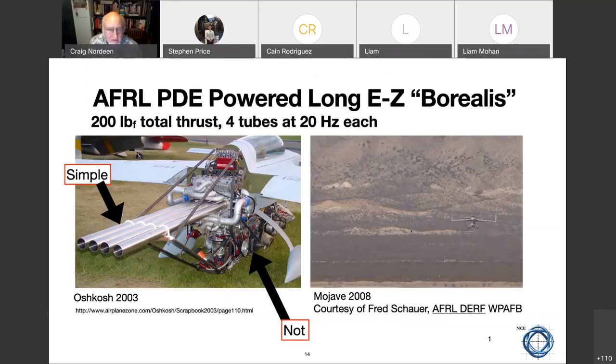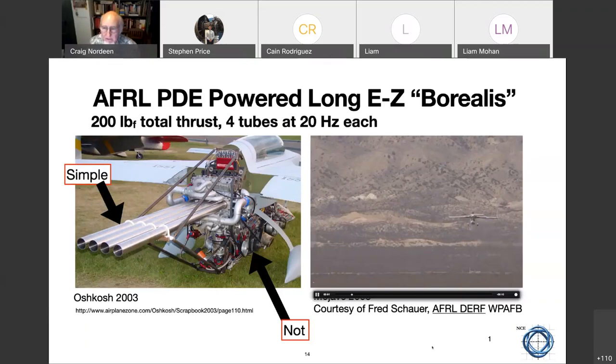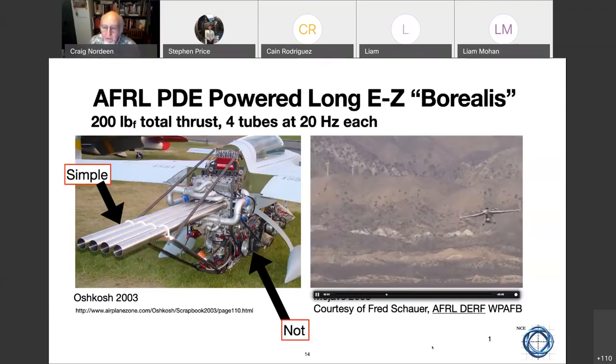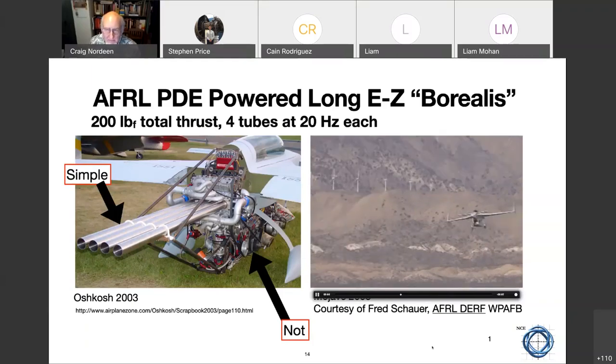So take a close look at the air force pulse detonation driven Borealis. The pipes are simple, but the rest of the equipment that you need to feed are not so simple. If you look closely, you'll see an automotive valve train that has been commandeered to help feed these pipes. But it does work and it works reasonably well. They had a 30 second flight and then they put it in the museum.